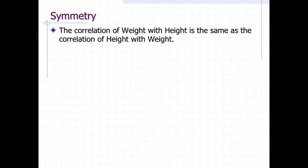Pearson's correlation is symmetric in the sense that the correlation of x with y is the same as the correlation of y with x. For example, the correlation of weight with height is the same as the correlation of height with weight.